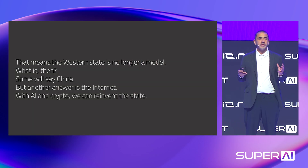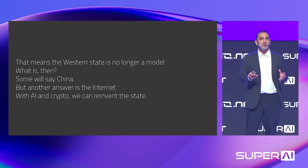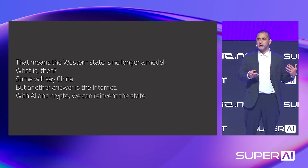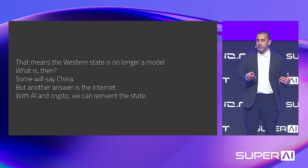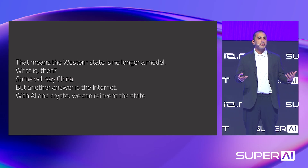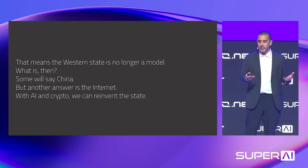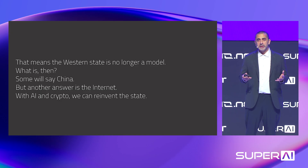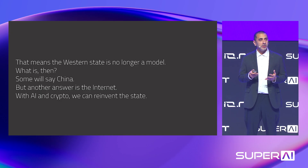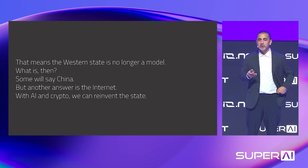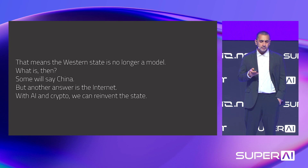Essentially, the Western state is no longer a model. Its own Western people don't trust it anymore. So what is the model? Some will say China, but another answer is actually the internet. And with AI and crypto, perhaps we can reinvent the state.